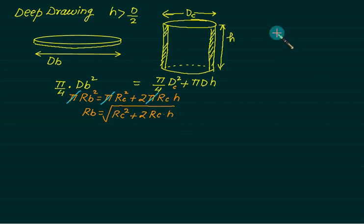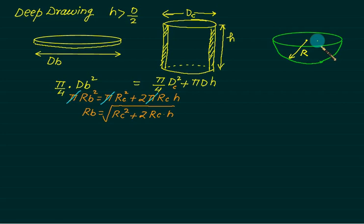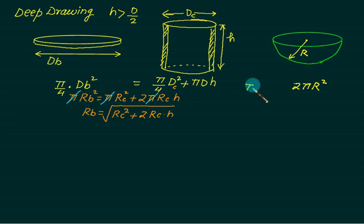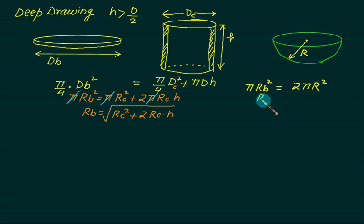Now suppose instead of a cup we want to make a hemispherical bowl of radius R. The surface area of a full sphere is 4πR², so for a hemisphere it is 2πR². Setting this equal to the blank area: π·Rb² = 2πR². Pi cancels, giving Rb = √2 · R. This is a fixed relation.